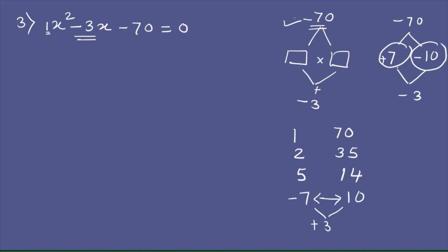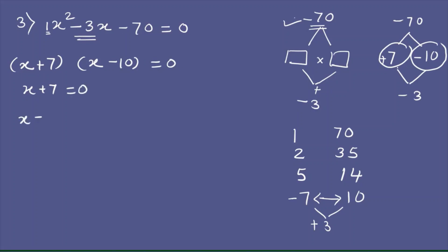So we write (x + 7)(x - 10) = 0. When we take x + 7 = 0, then x = -7. When we take x - 10 = 0, then x = 10.